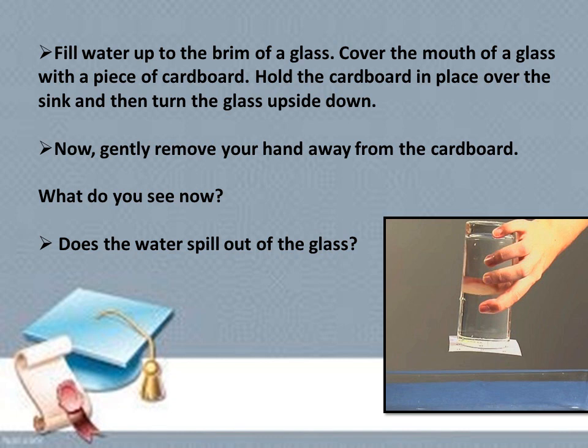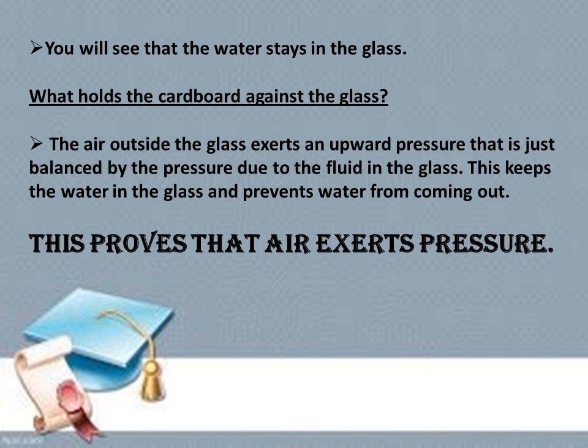What do you see? Does the water spill out of the glass? You will see that the water stays in the glass. What holds the cardboard against the glass? The air outside the glass exerts an upward pressure that is just balanced by the pressure due to the fluid in the glass. This keeps the water in the glass and prevents it from coming out. This proves that air exerts pressure.